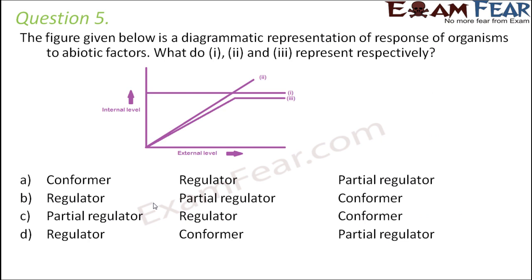Question number 5. The figure given below is a diagrammatic representation of response of organisms to abiotic factors. What do 1, 2 and 3 represent respectively? So these are the internal levels and these are the external levels.